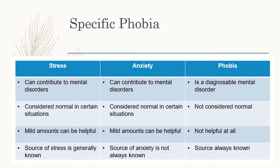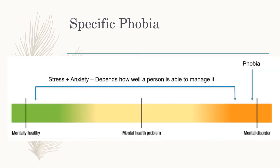You may want to pause the video and screenshot this and put it into your notes as it's quite helpful. Like mental illness, specific phobias are measured on a continuum. If you had a phobia you would be in the mental disorder category, and stress and anxiety depending on how well you're managing it would be in the middle section. A phobia is always in the mental disorder category because it is a diagnosable disorder.